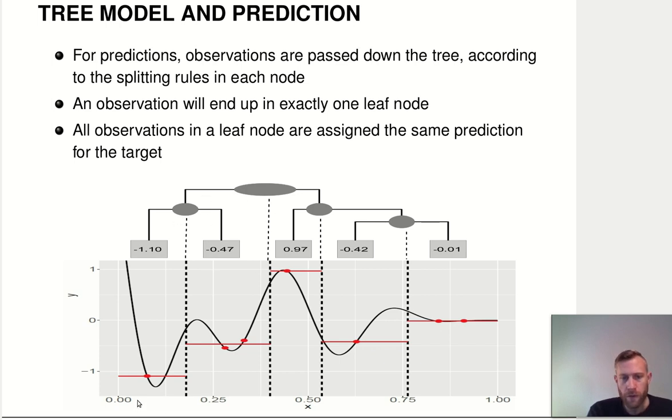You have this tree. In this case, the tree only uses x. And then you end up with a step function that approximates the function that you're trying to learn, more or less.